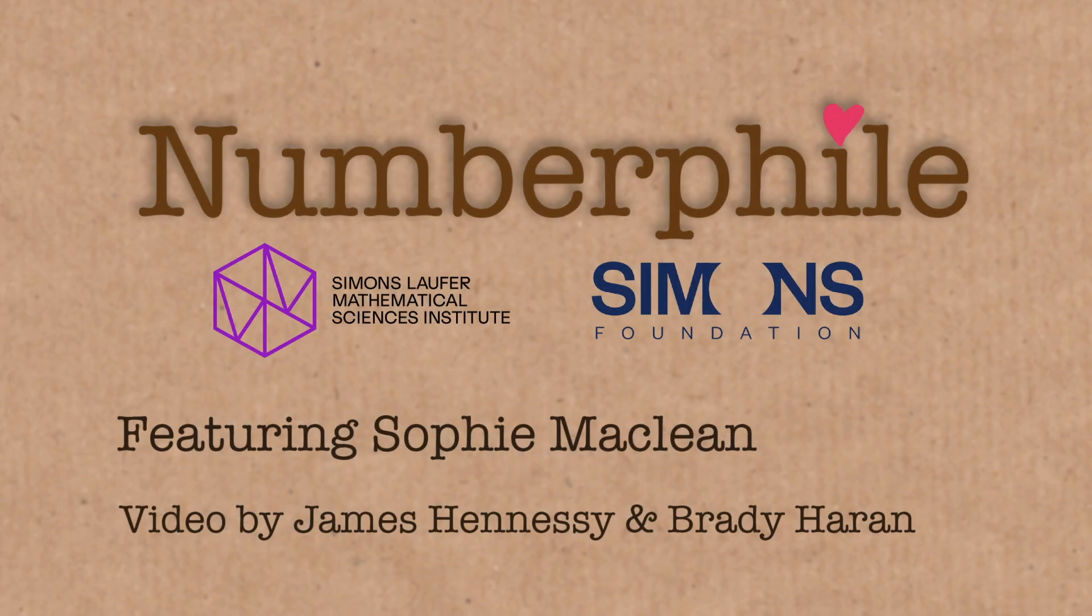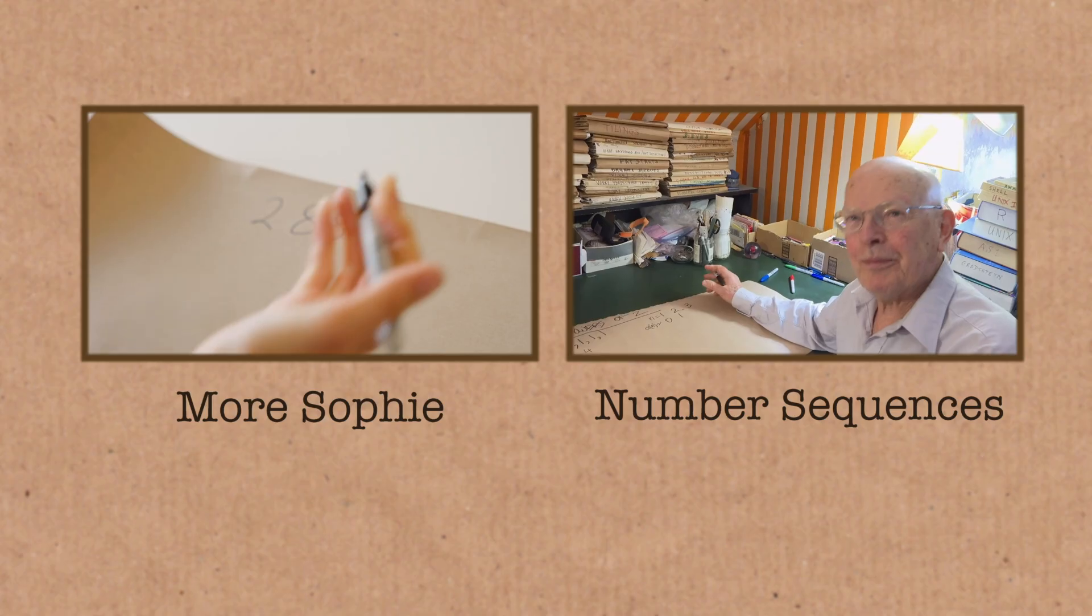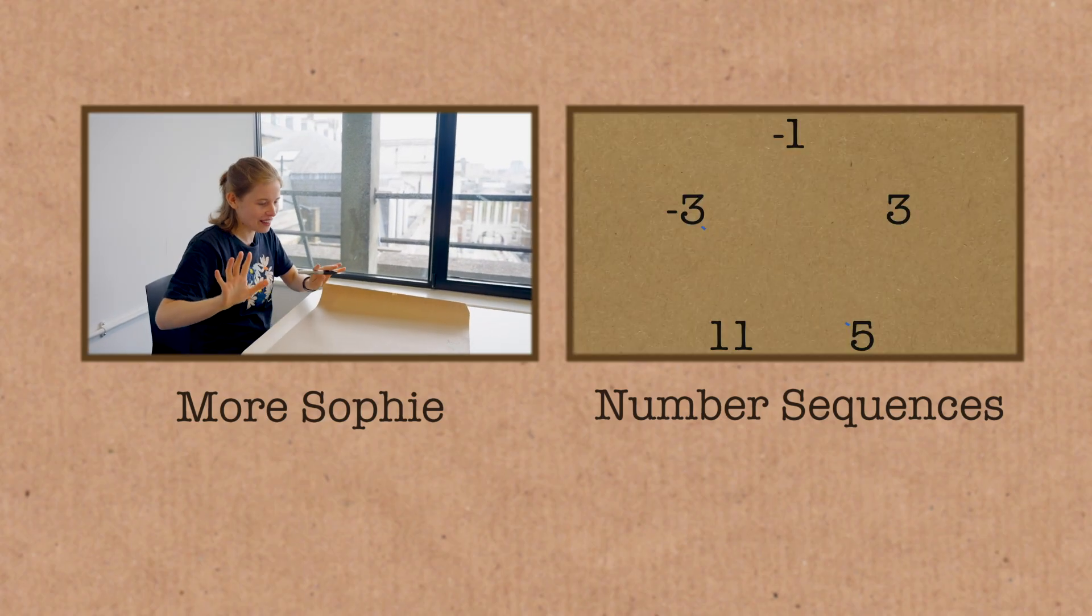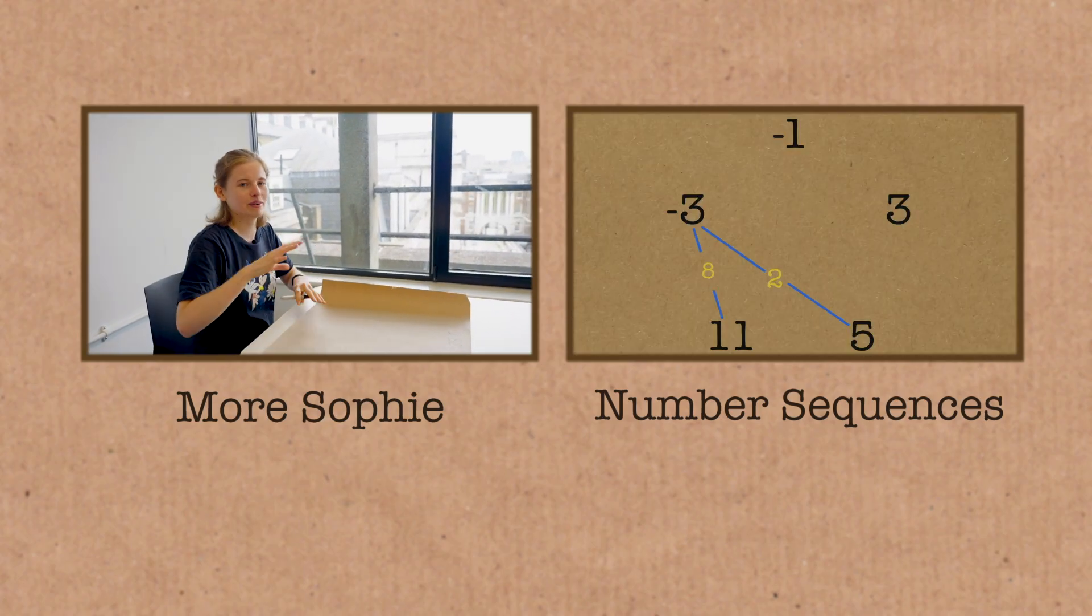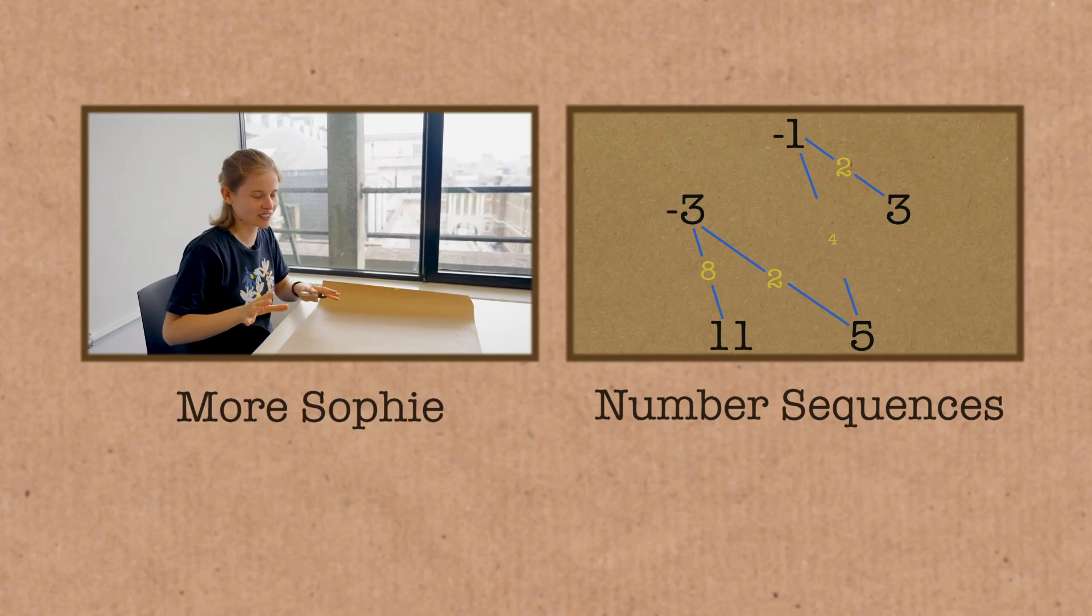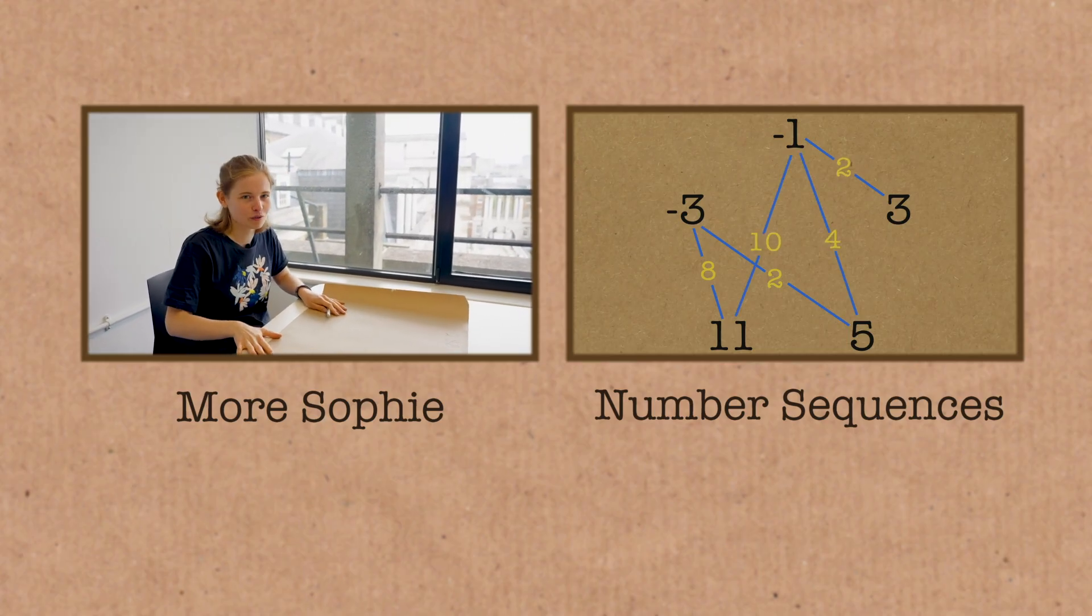So, my favourite number changes a lot, but for now it is 288. You might be looking at that and thinking, what's special about 288? Don't worry, we'll get there. But first we need to rewind a bit and talk a bit about factorials, specifically super factorials. Now, I know regular Numberphile viewers will have seen factorials before.